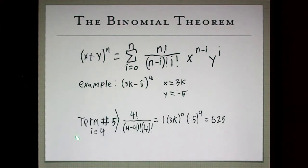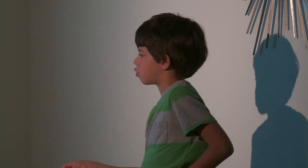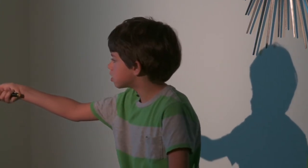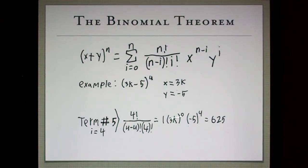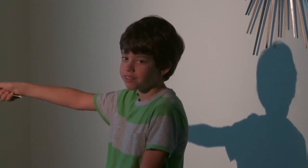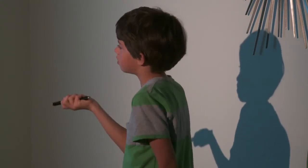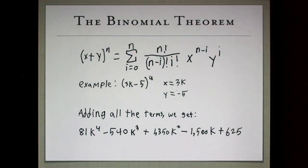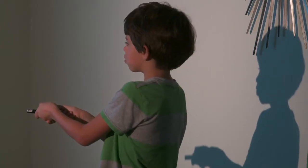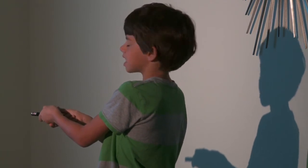And then, finally, term number 5. 4 factorial over 4 minus 4 factorial times 4 factorial. They all cancel out, all those 4's, and you get 1, so 3k to the 0, which is also 1. When we're left with negative 5 to the 4th, it's 625. And so then we string them all together, and we get 81k to the 4th minus 540k cubed plus 1,350k squared minus 1,500k plus 625. You can see how that would be hard to do with the FOIL method.